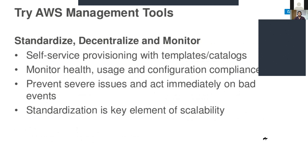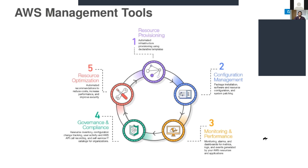AWS management tools are standardized, decentralized, and monitored. Self-service provisioning with templates and catalogs is provided. Monitor health, usage, and configuration compliance. Prevent severe issues and act immediately on bad events. Standardization is a key element of scalability. The management tools cover: resource provisioning, configuration management, monitoring and performance, governance and compliance, and resource optimization.